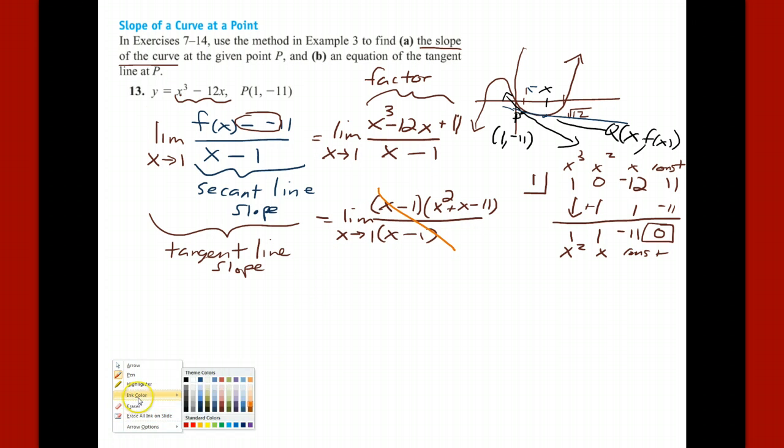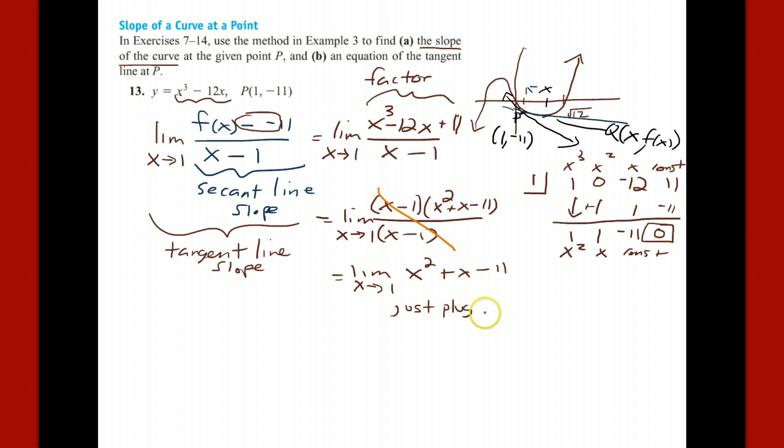And we can immediately just plug in x equals 1. We can just write out the fact that we have now the limit as x goes to 1 on x squared plus x minus 11. And we just plug in 1 now. There's nothing to stop you. We had division by 0 before that stopped us, but now we don't have that anymore. And the answer is going to be 1 plus 1 minus 11. The answer is going to be a negative 9.